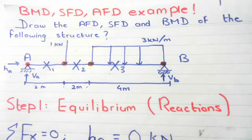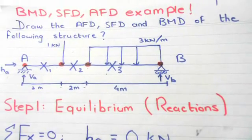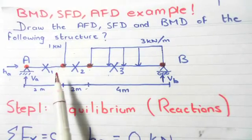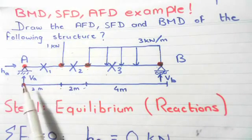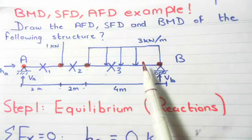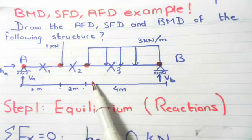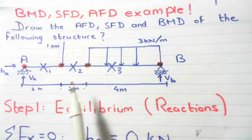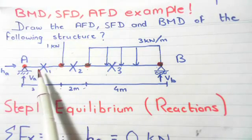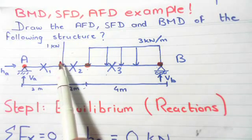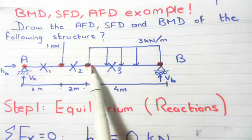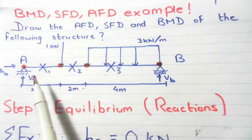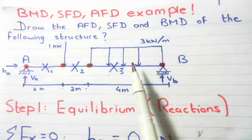We have a simply supported beam pinned at one end and a roller at the other. There is a one kilonewton point load two meters from the pin, and a three kilonewton per meter UDL that starts from the roller and spans four meters to the left. We need to determine how many cuts are required: cut one before the point load, cut two after the point load, and cut three covering the UDL. Cuts one and two will be made from the left, and cut three from the right.